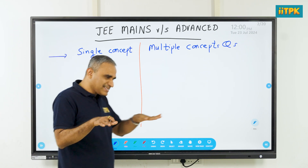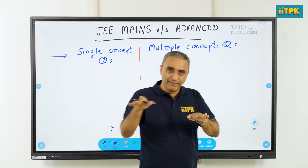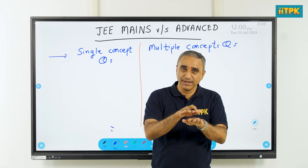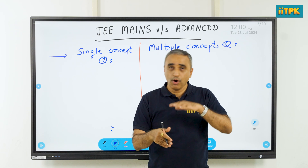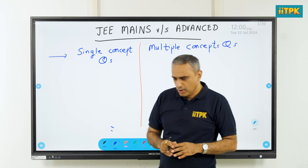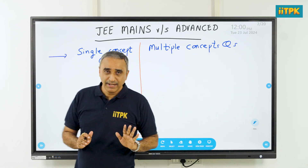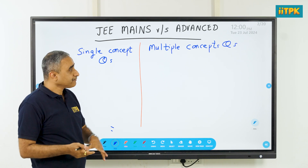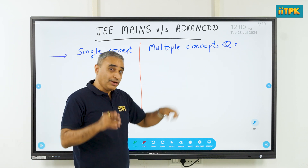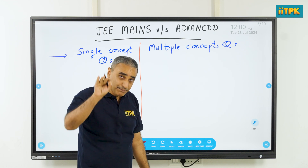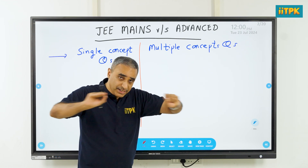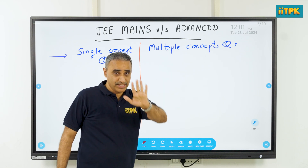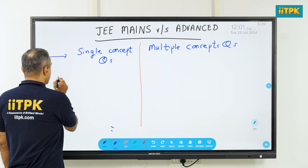Certain questions based on a single concept also appear in JEE Advanced, which is why there is some overlap between Mains and Advanced in terms of difficulty level. A particular question in this overlap region may appear in Mains or in Advanced. But almost two-thirds of the JEE Advanced paper definitely has novel questions which test more than one concept at a time — and those concepts are not necessarily from one chapter; concepts from two or three different chapters may be combined to solve a particular question.